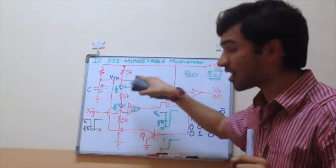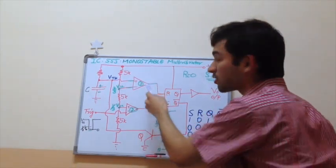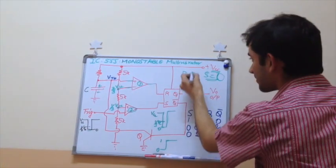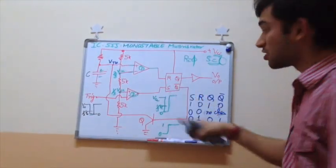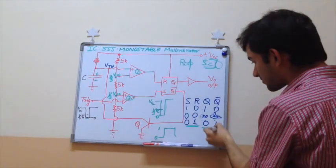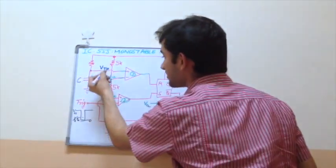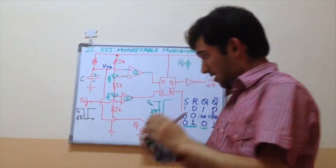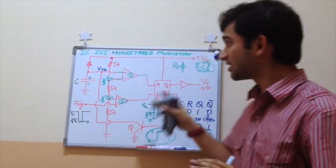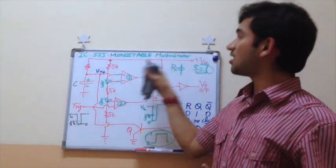As soon as the capacitor voltage increases above 2/3 VCC, the positive potential becomes more than the negative potential and the output of comparator 1 becomes 1. S was 0 and now R becomes 1, so I land at the reset condition — output becomes 0. As soon as output becomes 0, Q bar becomes 1, the transistor is activated, and the capacitor starts to discharge through that terminal. Finally, I have one complete wave — that's it — and the capacitor discharges to zero. The circuit does not proceed further because there are no additional triggers, and this is how a monostable multivibrator works.